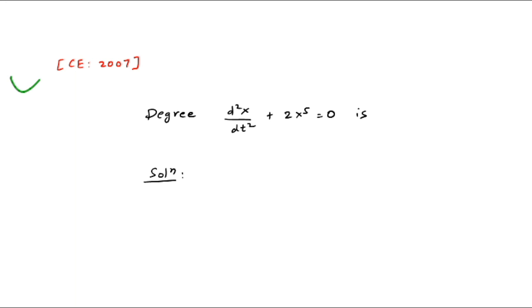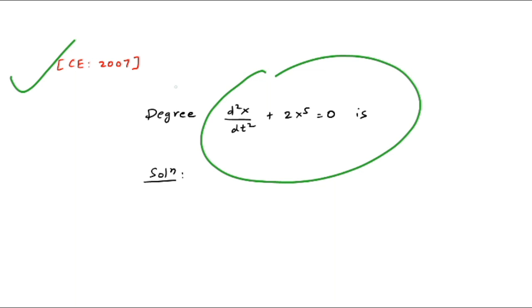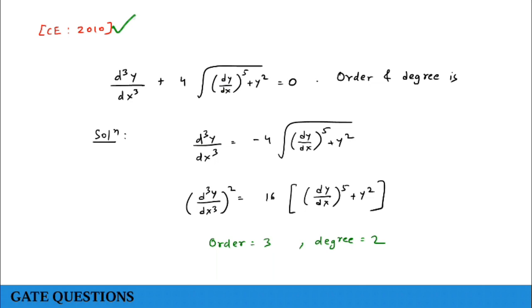Computer Engineering 2007 GATE question asks for the degree of the differential equation. The speaker invites viewers to comment with their answers for both order and degree, and says he will confirm whether they are correct.